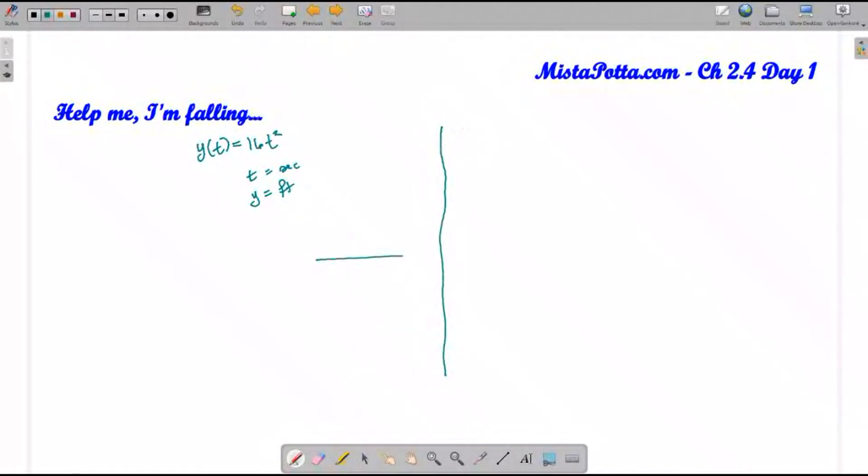What I've got here is a parabolic curve with these data points. After I've fallen one second, one squared is one, one times 16 is 16. After two seconds, two squared is four, and four times 16 is 64 feet. After three seconds, three squared is nine, and nine times 16 is 144. After four seconds, four squared is 16, and 16 times 16 is 256.